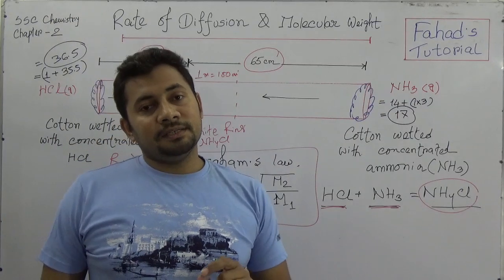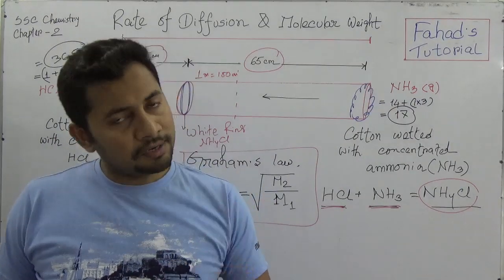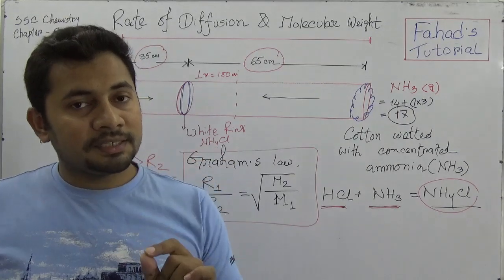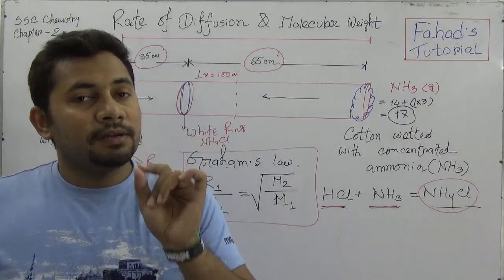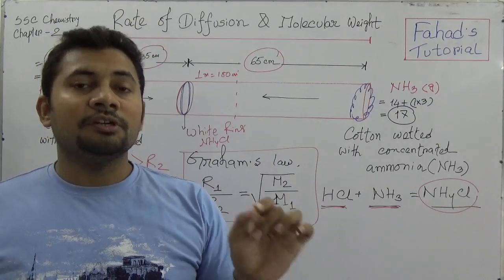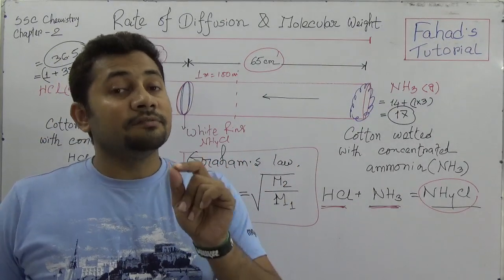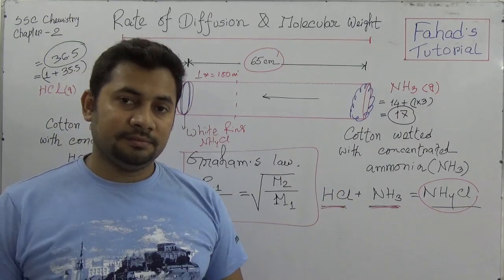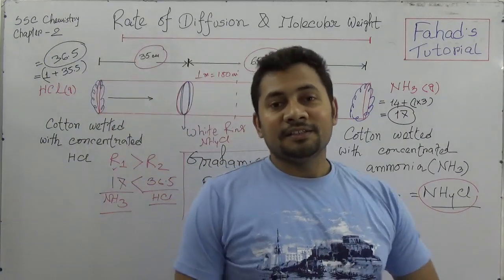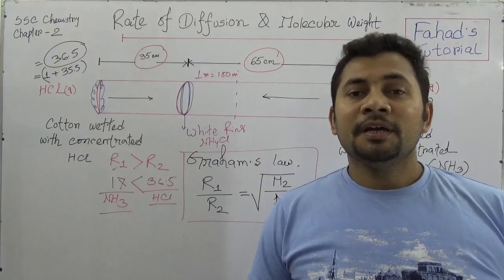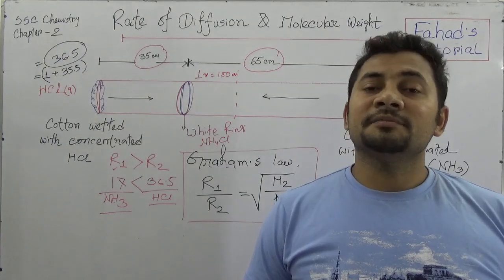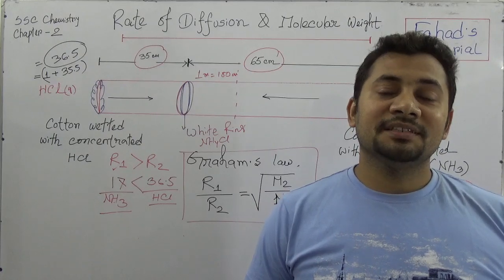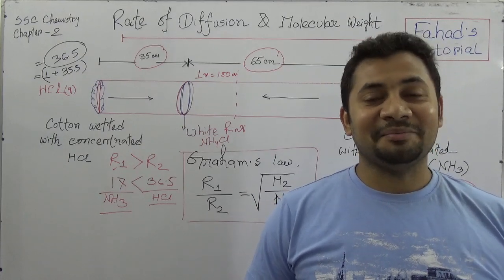We can conclude that the rate of diffusion of ammonia was higher than the rate of hydrochloric acid. This demonstrates the relation between rate of diffusion or effusion and molecular weight: the rate of diffusion of any gas is inversely proportional to its molecular weight. See you in the next class — please let me know your requirements and I will adjust my classes accordingly.